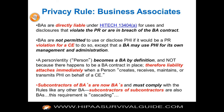BAs are directly liable under Section 13404A of the HITECH Act for uses and disclosures that violate the privacy rule or are in breach of the BA contract. BAs are not permitted to use or disclose PHI if it would be a privacy rule violation for the covered entity to do it. BA may use PHI for its own management and administration — that's obvious, because if you couldn't, you couldn't perform the business function the covered entity needs you to perform. You become a BA by operation of law, therefore liability attaches immediately, whether or not you have an agreement. If you create, receive, maintain, or transmit PHI on behalf of a CE, you're a business associate.